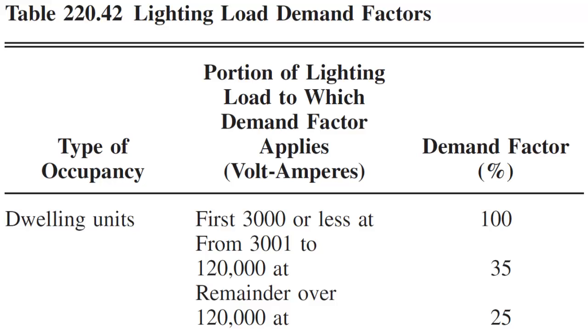Our lighting load demand factors are as follows. For the first 3,000 VA that we have, we have to take that at 100%. The rest, we take at 35%. The reason I say the rest is because you will probably never come up with a calculation that would be higher than 120,000 VA.